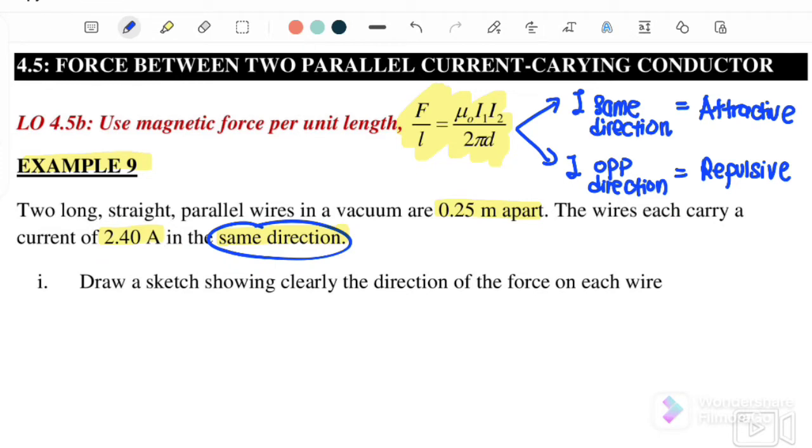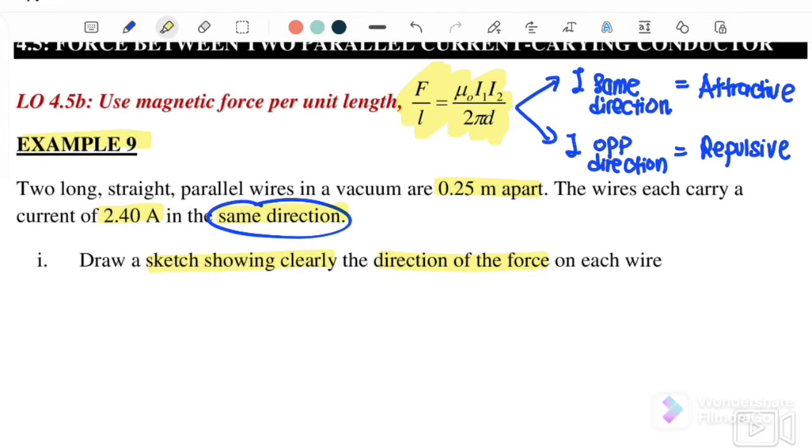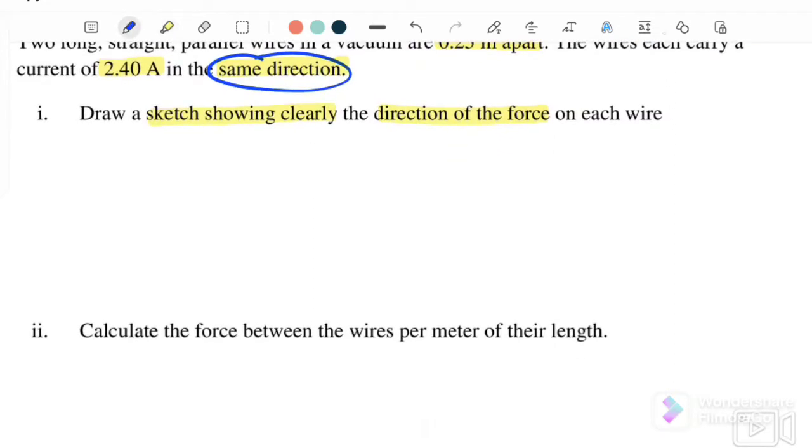Draw a sketch showing clearly the directions of the force on each wire. So if this is my wire, this is wire one, this is wire two, assuming that both currents are flowing in the same direction and both of them are flowing upward.